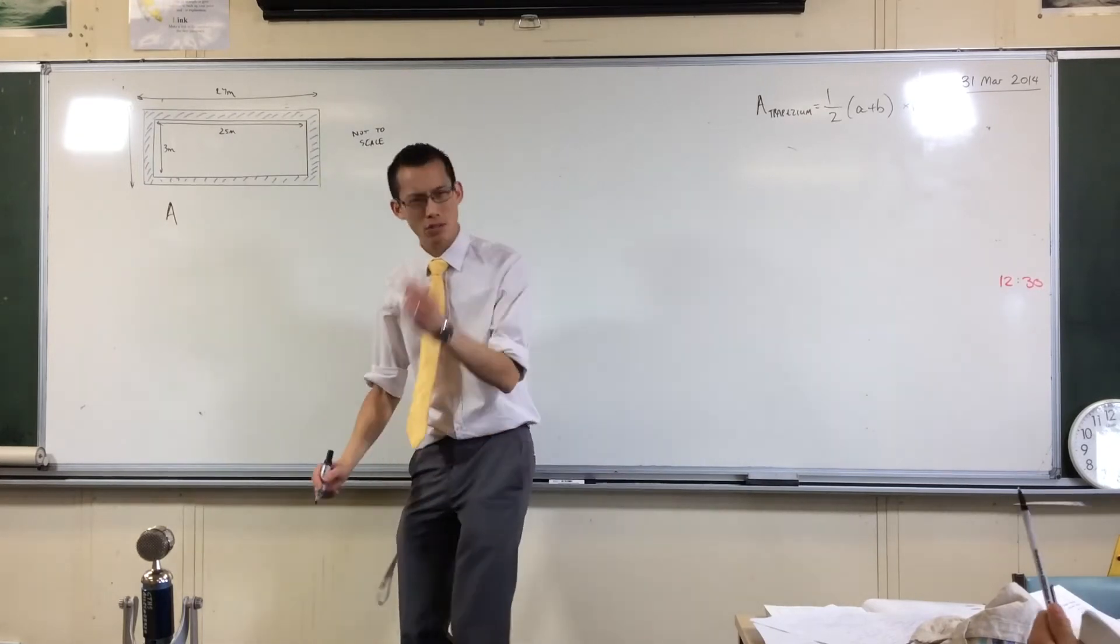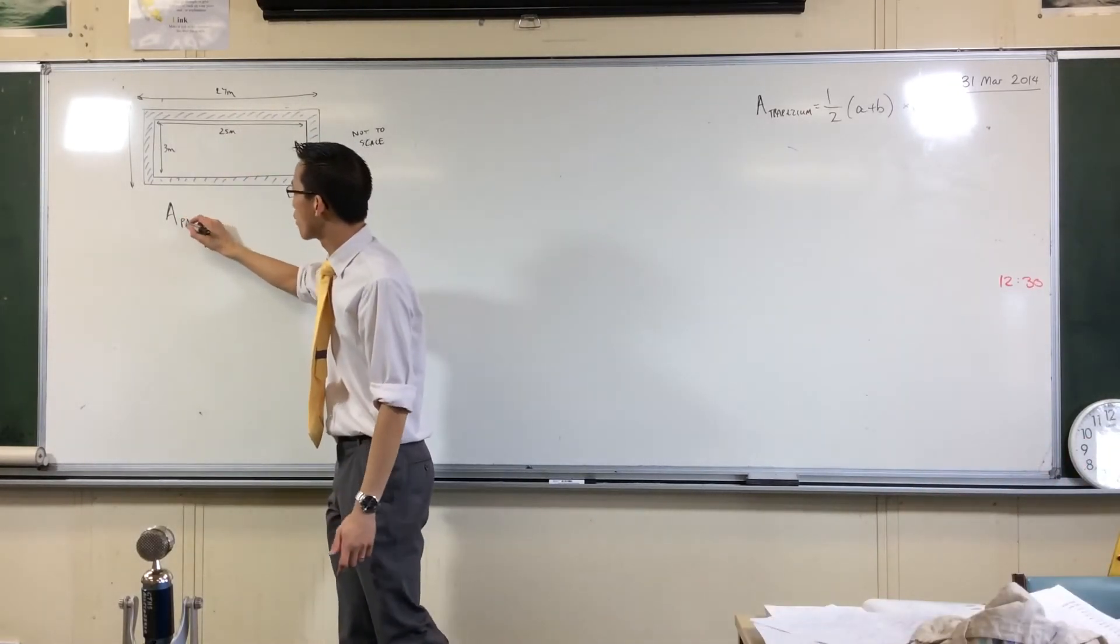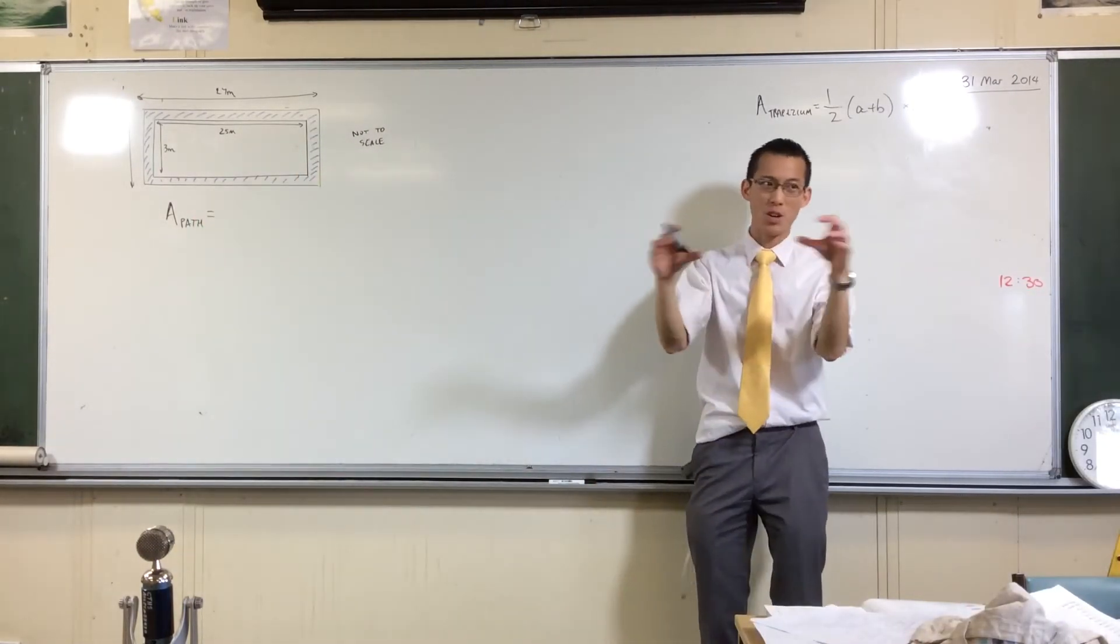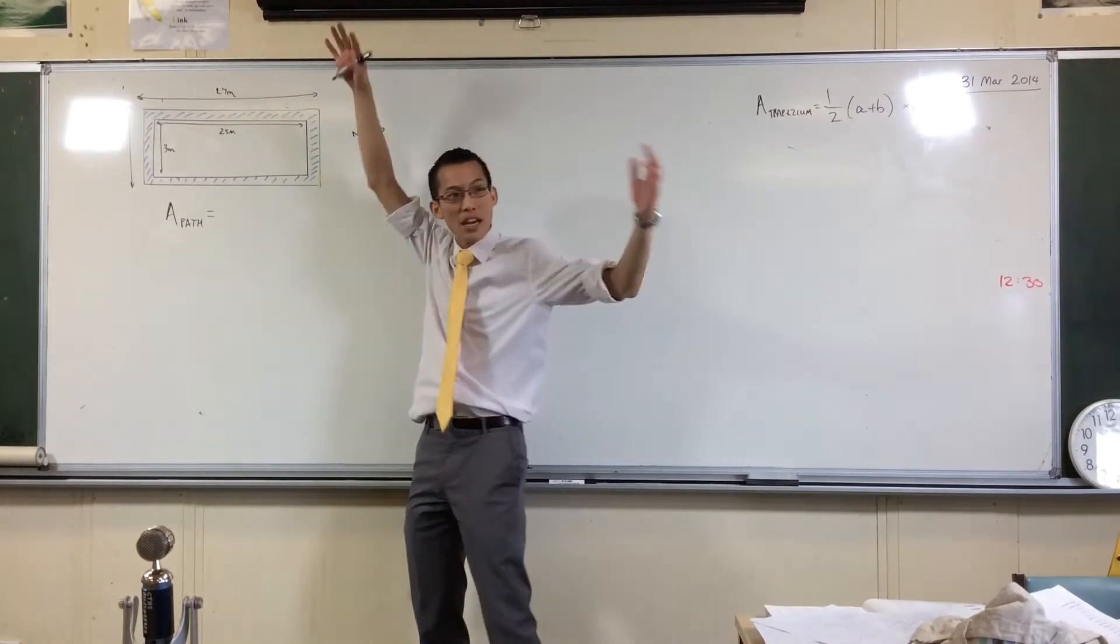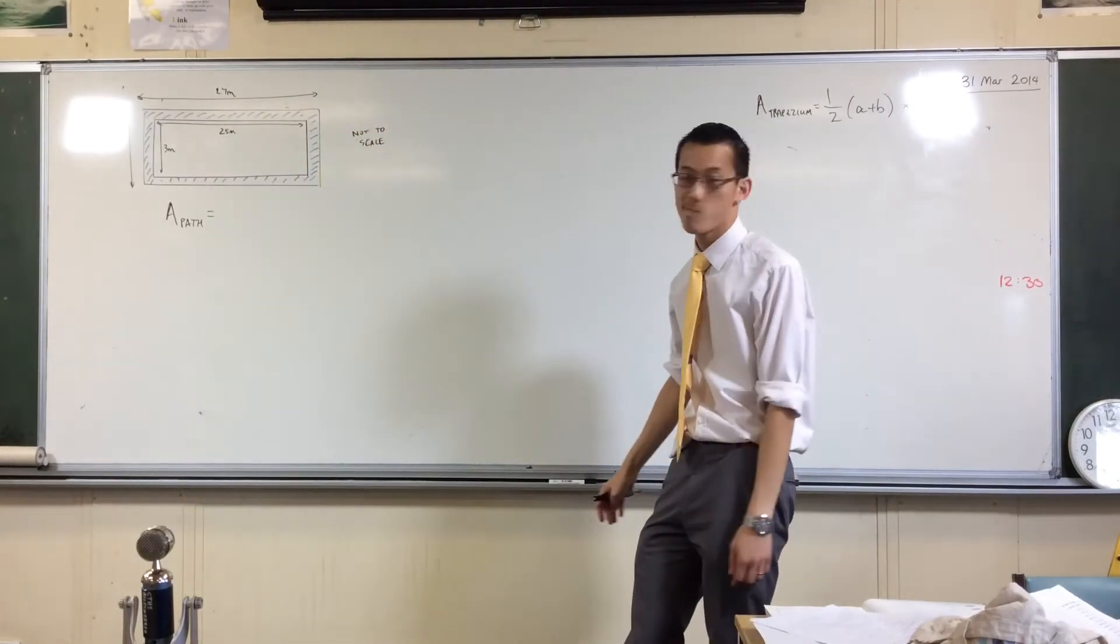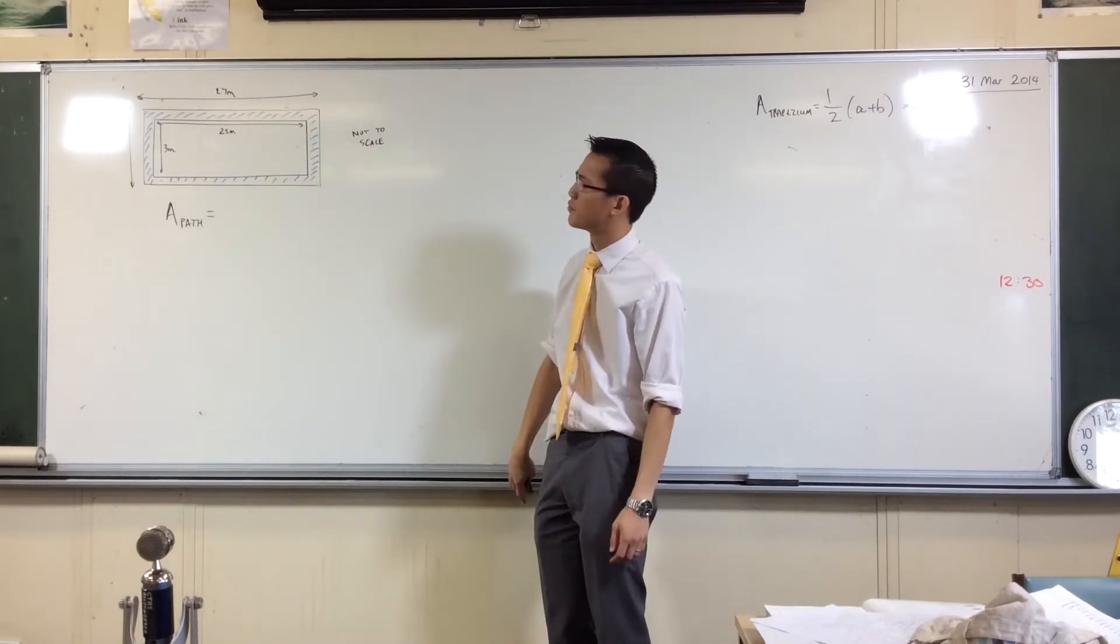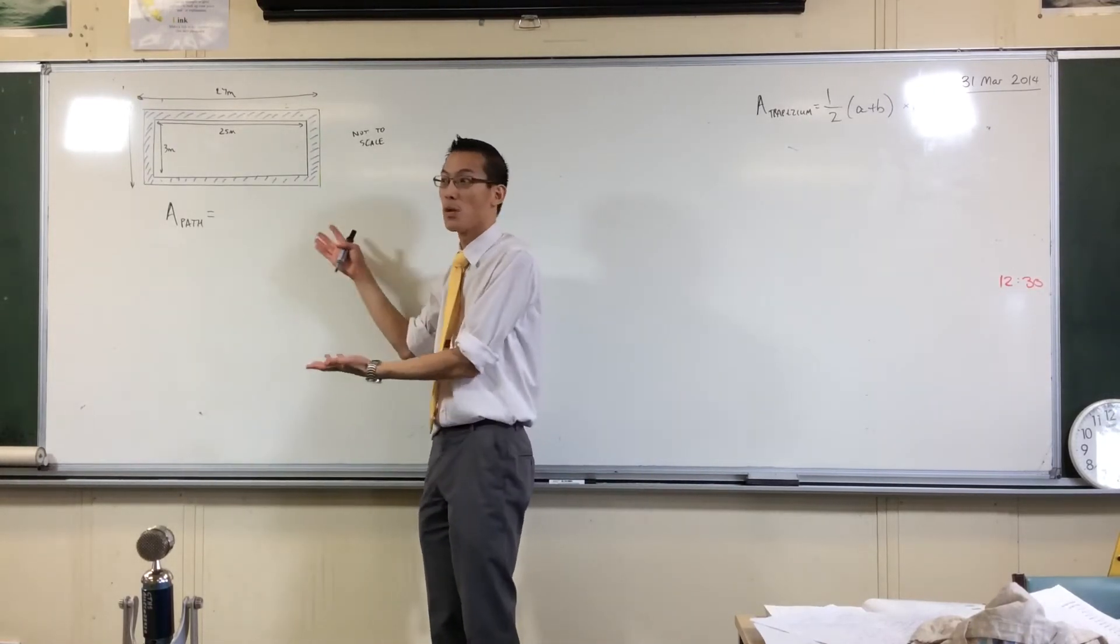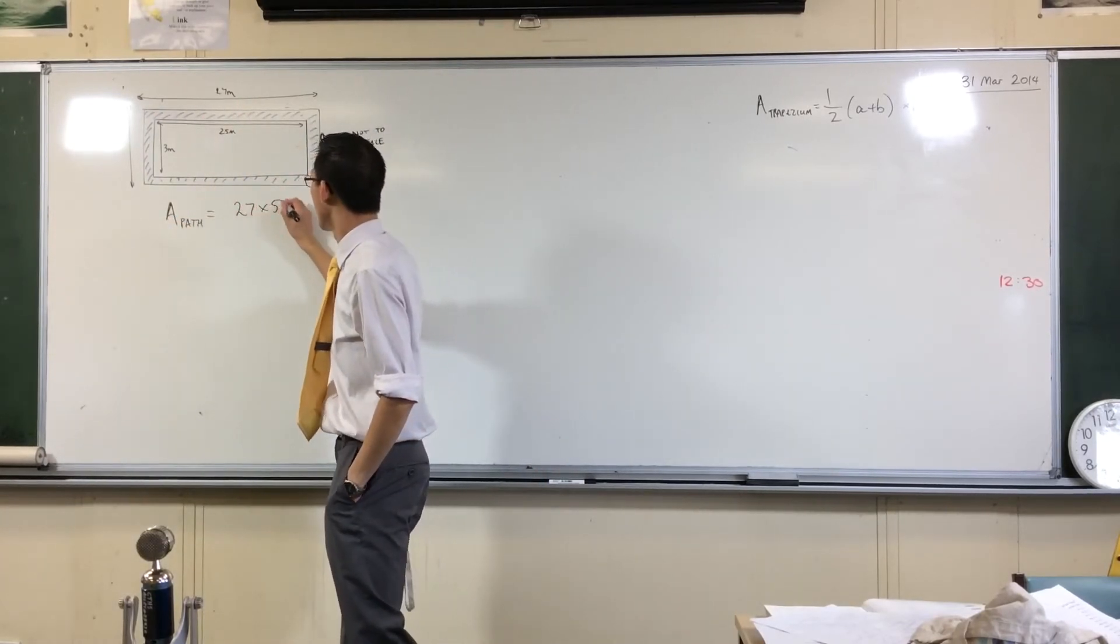Now, we tend to say A for area, right, but try to be a little more specific. There's all these different areas here. So I would go area of the path, A. So I put that path, the technical word is just a subscript, so it's just underneath. That's what sub means. Now, I said it's the big rectangle. What's the area of the big rectangle? The big rectangle? 27. Yeah, so I said, what's the area of the big rectangle? Because that's the one I have to work out first. And that's 27 by 5.